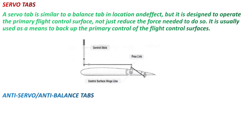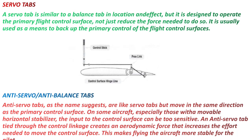Anti-servo tabs, as the name suggests, are like servo tabs but move in the same direction as the primary control surface. On some aircraft, especially those with a movable horizontal stabilizer, the input to the control surface can be too sensitive. Anti-servo tabs tied through the control linkage create an aerodynamic force that increases the effort needed to move the control surface, making flying the aircraft more stable for the pilot.